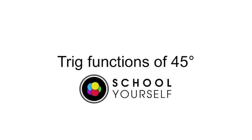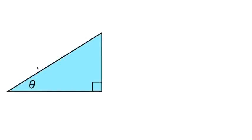Evaluating trig functions for 45 degrees. Let's say we have a right triangle with an angle theta. Let's label the sides as opposite, adjacent, and hypotenuse.